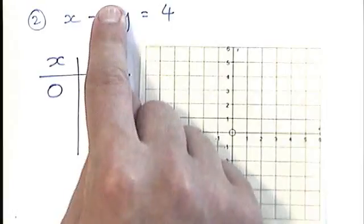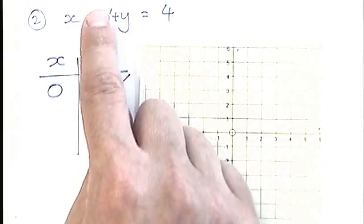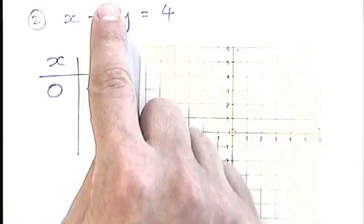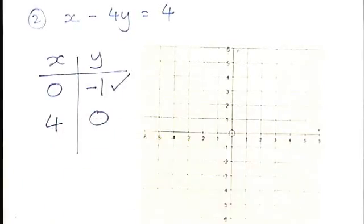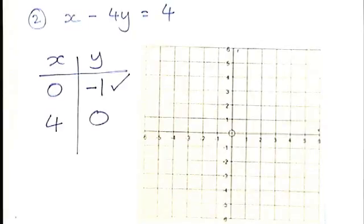Then if I cover up the y's, I've got x, ignore that minus because it's not really minus anything. I'm covering that up as well. x equals 4. Just a single x equals 4. So no division needed. I've got that answer.